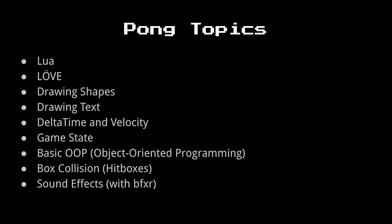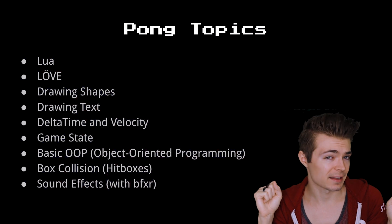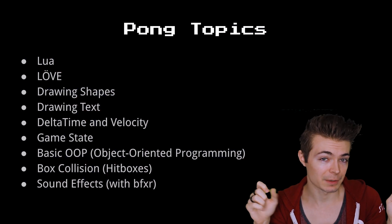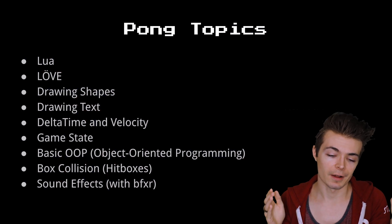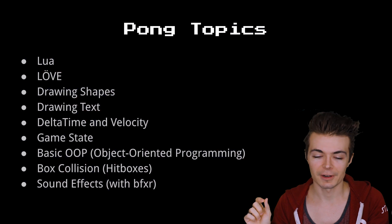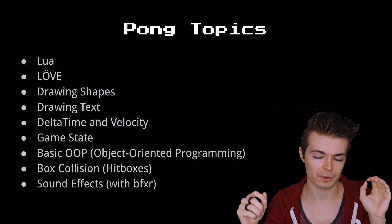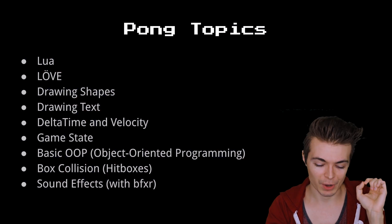We'll look at game state — whether we're serving the ball, whether somebody has scored 10 points and it's game over, whether it's the very start of the game. Those are all game states, and we'll look at how to transition between them. We'll look at basic object-oriented programming, which is extremely prevalent in game development and very good to get at least a basic grasp on. We'll need to know how to actually collide things together — box collision, specifically axis-aligned bounding boxes, or AABB. And lastly, to polish off Pong, we'll add sound effects: when the ball hits the paddle, when we score — it adds just a little bit of spice and polish to the game.